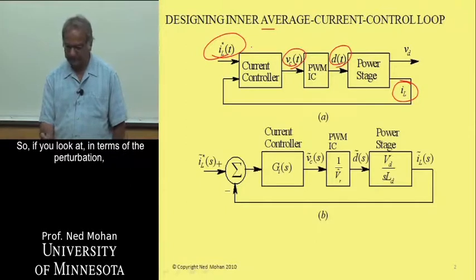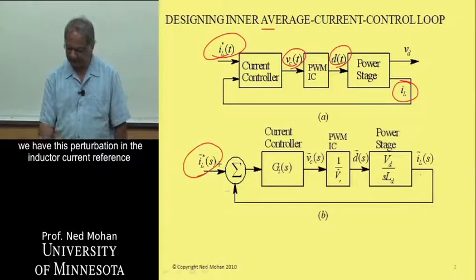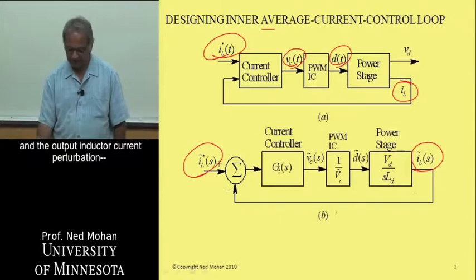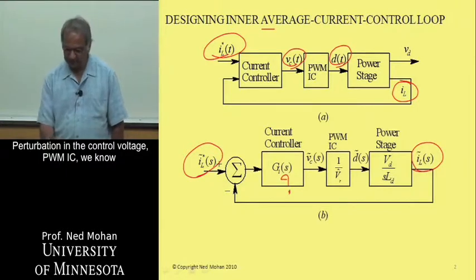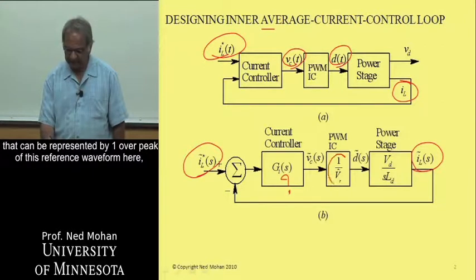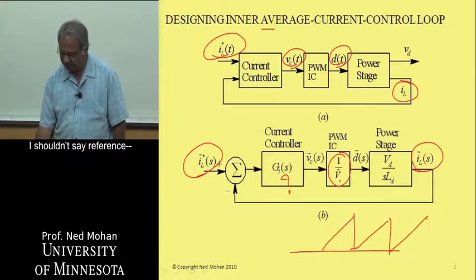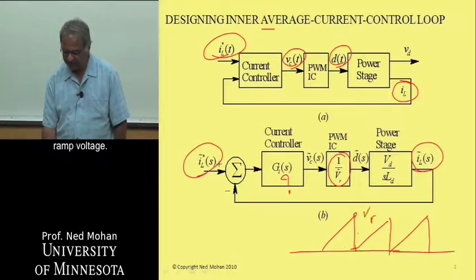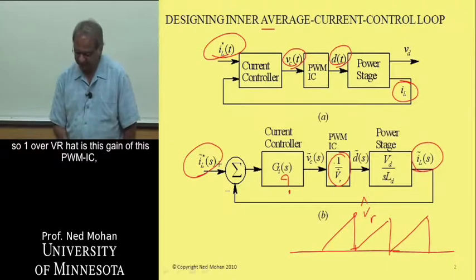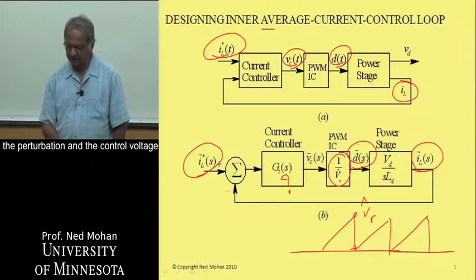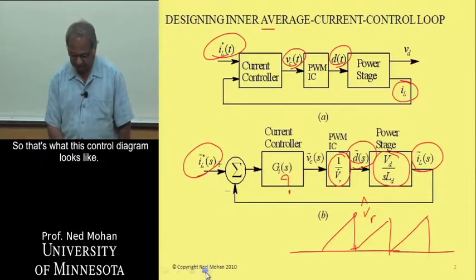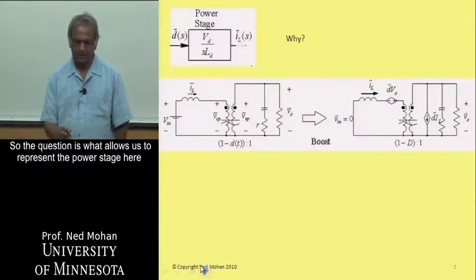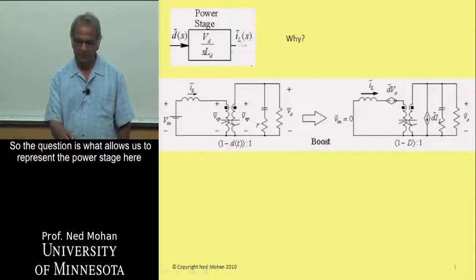In terms of the perturbation, we have the perturbation in the inductor current reference and the output inductor current. The error between these two goes to the current controller. The perturbation in the control voltage goes to the PWM IC, which can be represented by one over the peak of the ramp voltage Vr-hat. So one over Vr-hat is the gain of the PWM IC. And then the power stage can be represented by a transfer function.